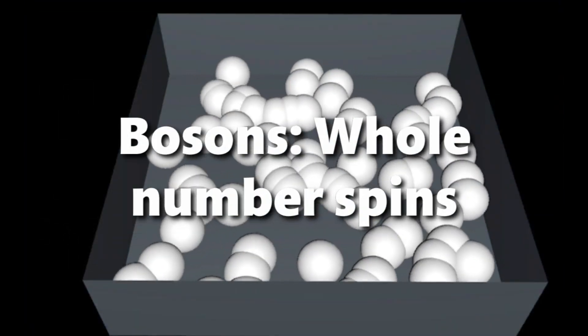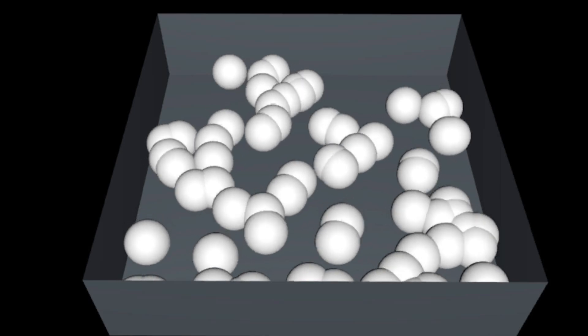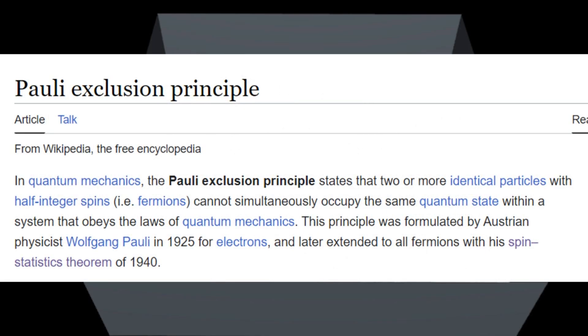Meanwhile, the whole number spins of bosons allows them to share the same states as other bosons, according to the Pauli exclusion principle.